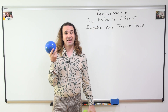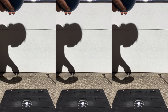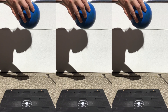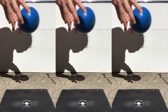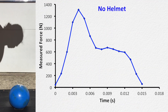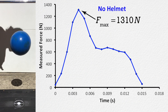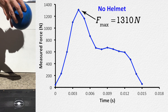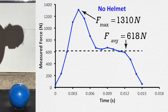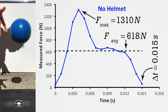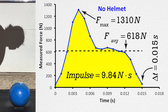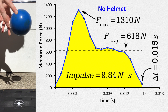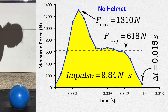Is the medicine ball wearing a helmet? Nope, no helmet on that medicine ball. I dropped the medicine ball, which is currently not wearing a helmet, from a height of 39.5 centimeters and it lands on a force platform. The force as a function of time looks like this. The maximum force of impact was 1,310 newtons. The average force of impact was 618 newtons. The time during the collision is 0.015 seconds. And the impulse, or the area under the curve, is 9.84 newton-seconds. Again, this is all information while not wearing a helmet.